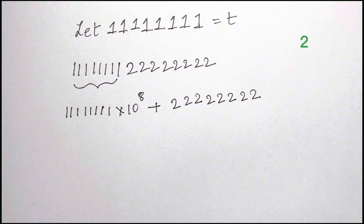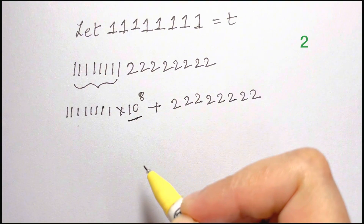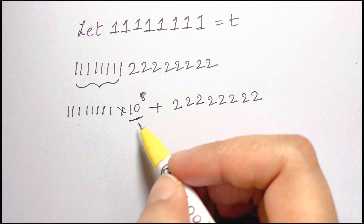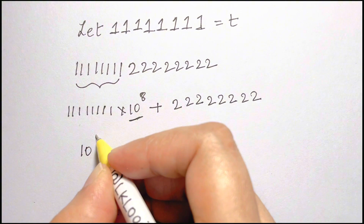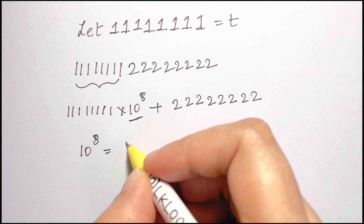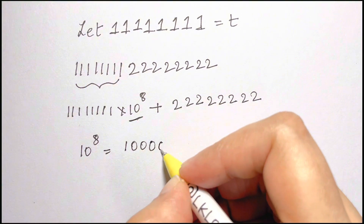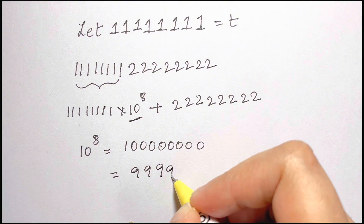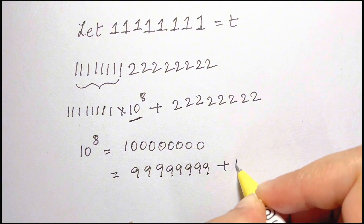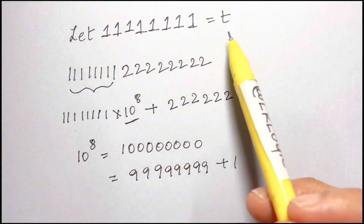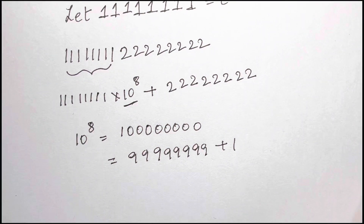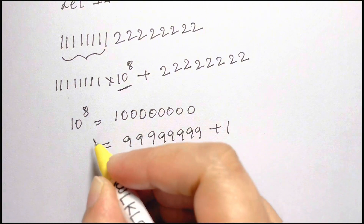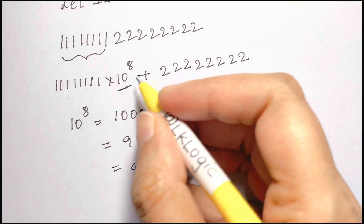Now, this 10 to the power of 8 looks complicated, right? How can we solve with 10 to the power of 8? We are going to take 10 to the power of 8 as 100000000, which can be written as 99999999 + 1. As we know, we have substituted 11111111 as t, so 99999999 = 9 times t. That gives us 10 to the power of 8 = 9t + 1.